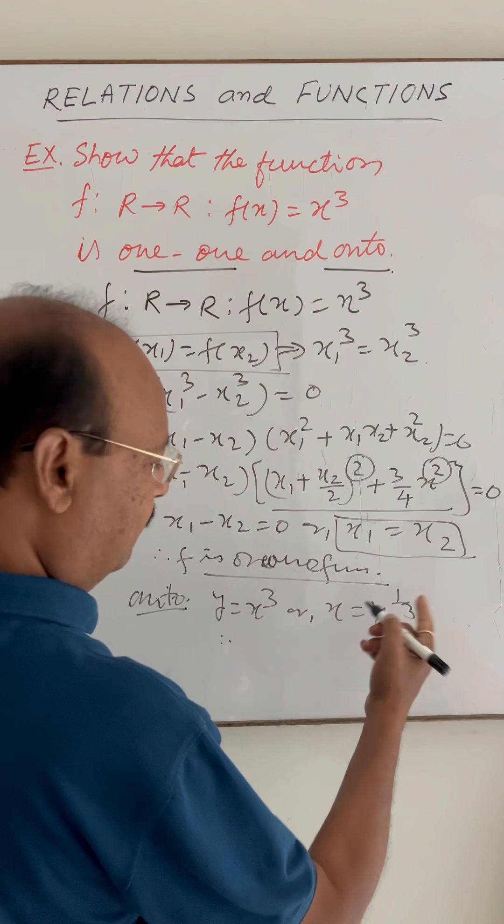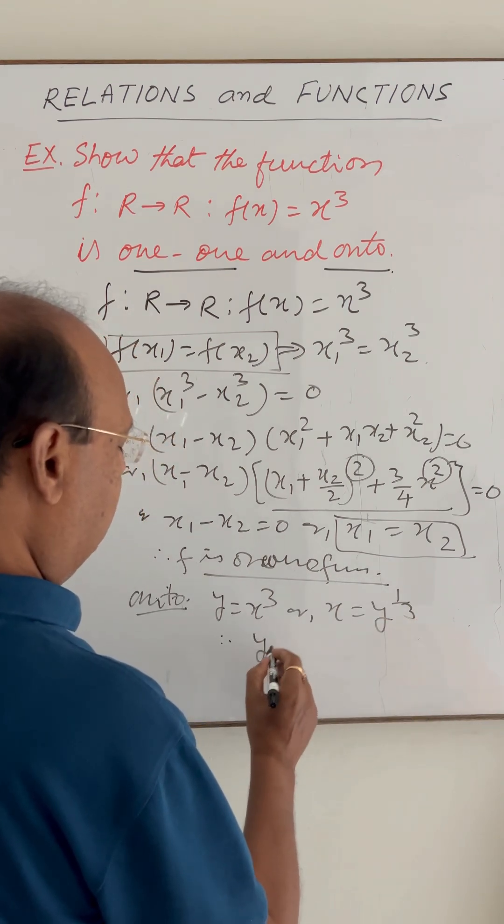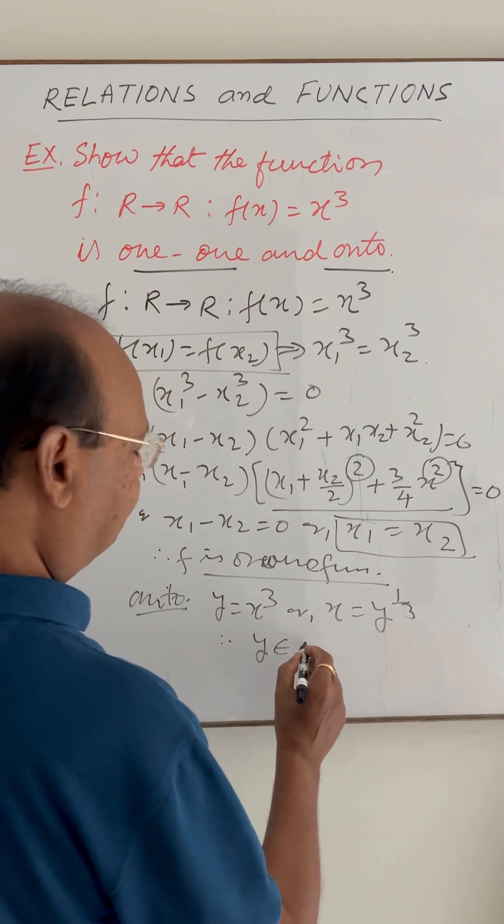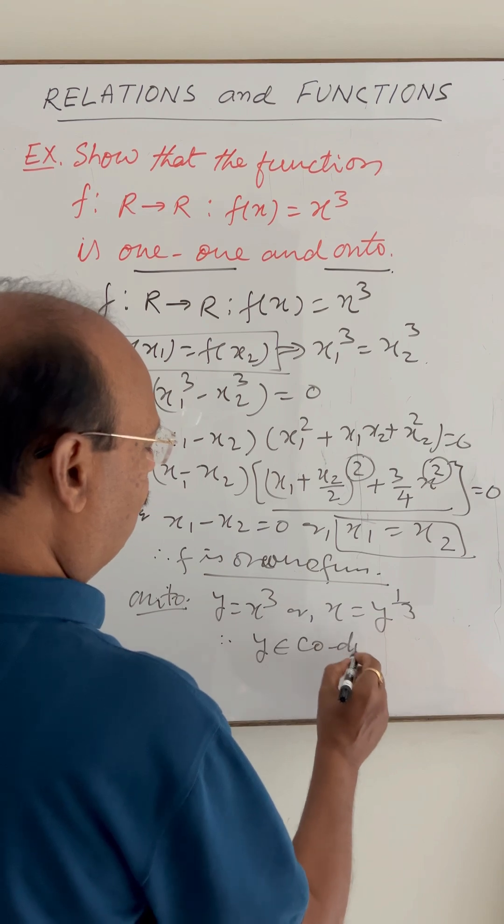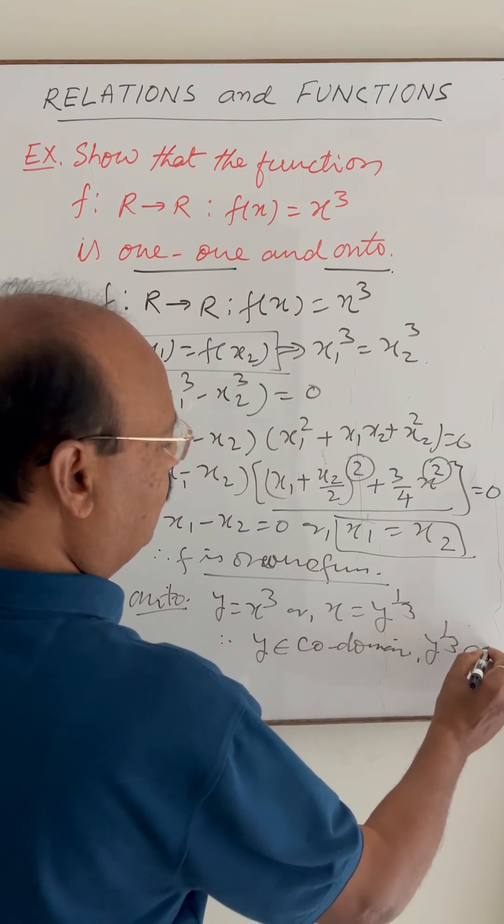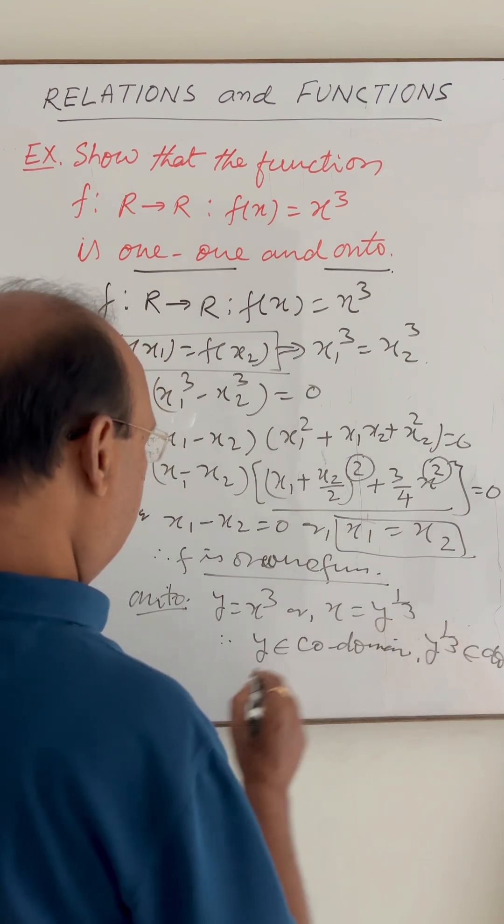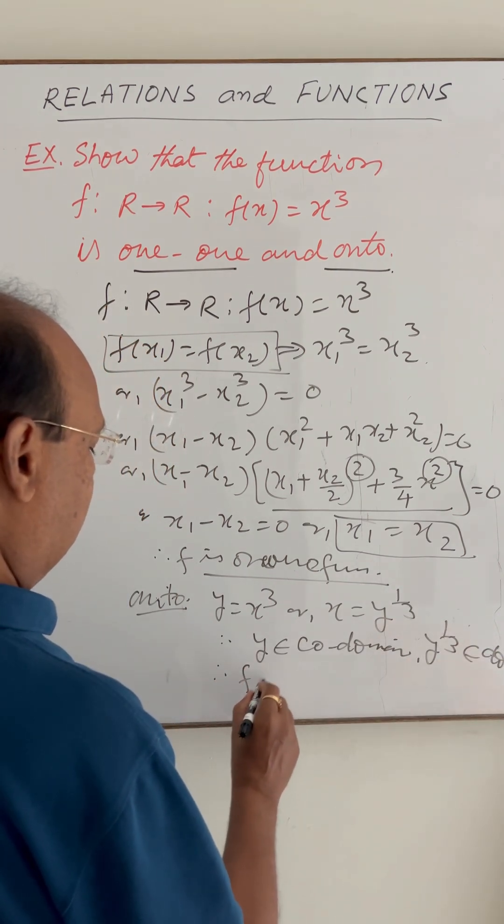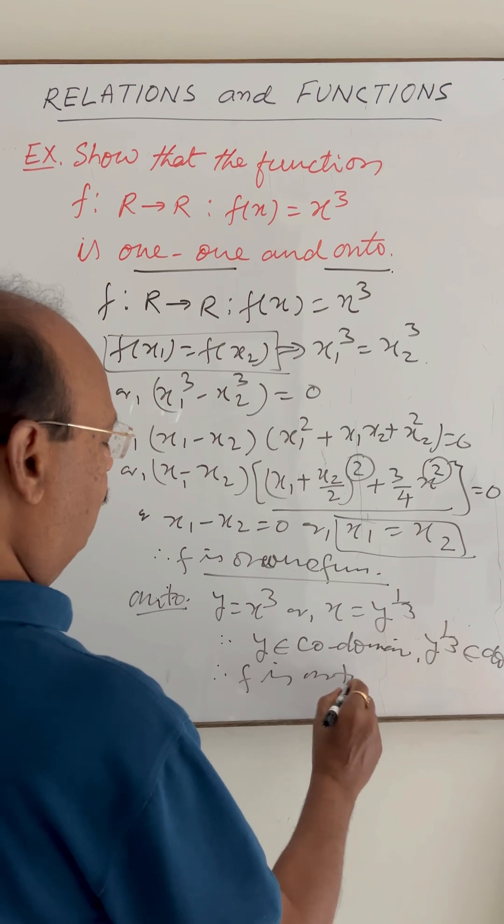Therefore, corresponding to every number y belonging to co-domain, there is y to the power 1 by 3 belonging to domain. Therefore, this function f is onto function.